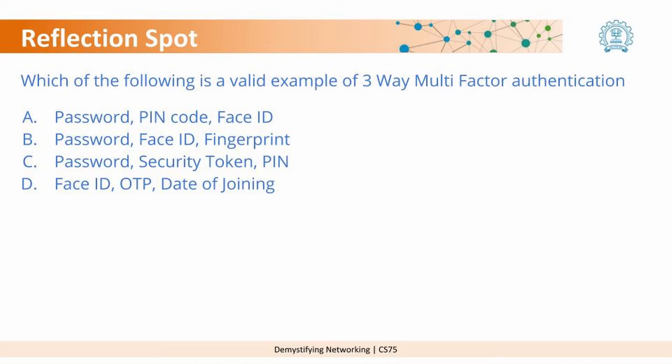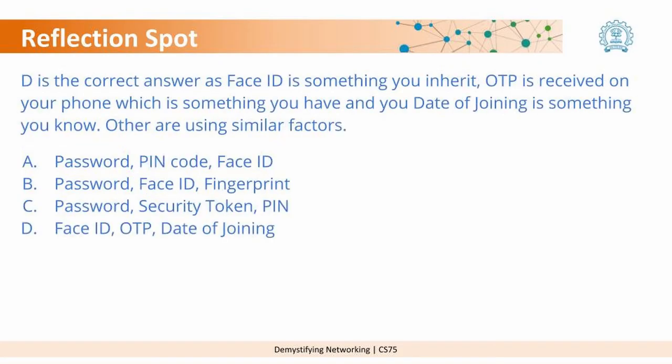D is the correct answer. Face ID is something you inherit — which is basically your face. OTP is received on your mobile phone, that is something you have. And date of joining is something that you know. The other options are using similar factors.